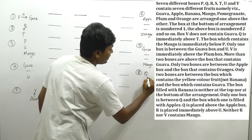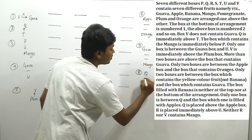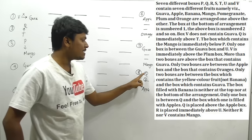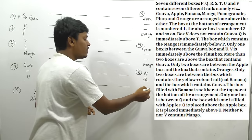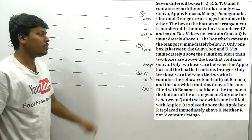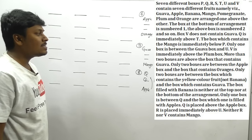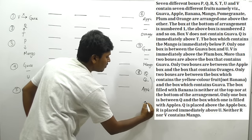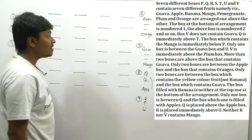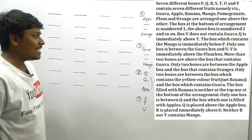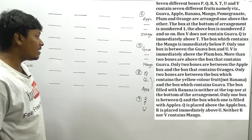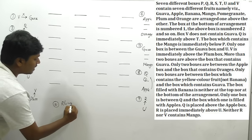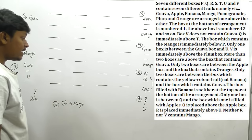So Q is above the apple box with one box gap between them. Clue 11: R is placed immediately above U — so above U, R should come. Clue 12: Neither R nor V contains mango. We have now noted all clues. Remarkably, we can't substitute any data yet — this is why it's an excellent, toughest-level arrangement question.